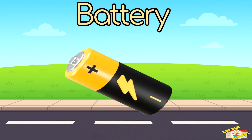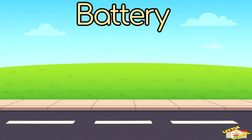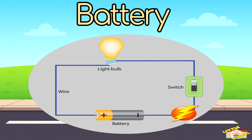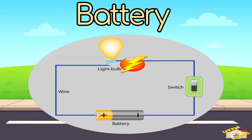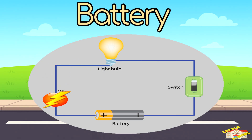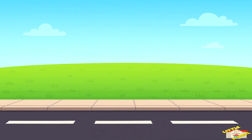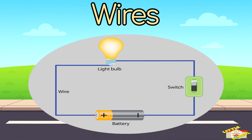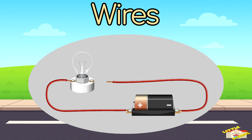The battery pushes electricity, kind of like how your heart pumps blood through your body. Number two: wires. Wires are like roads for electricity.